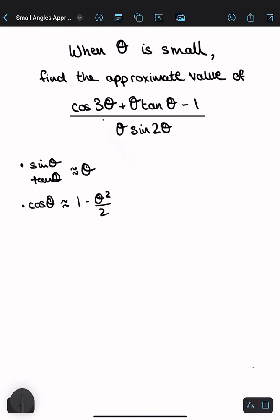All you have to do is substitute these in and replace θ wherever needed. So cos 3θ becomes 1 minus 3θ squared over 2, so replacing the θ with 3θ, plus θ times tan θ becomes just θ.